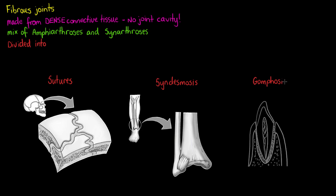Starting with sutures, the first thing to note is that they are only found within the skull, and the term suture refers to it appearing almost like a seam between the bones. They consist of only very short connective tissue fibers that connect to the periosteum of the bones. These sutures allow for bone growth within the skull at an early age, forming a seam between those bones of the skull.